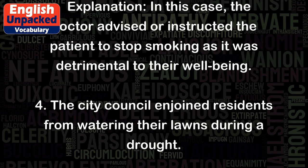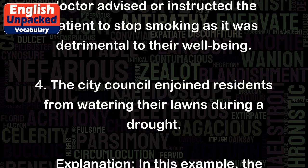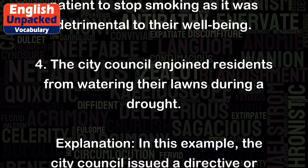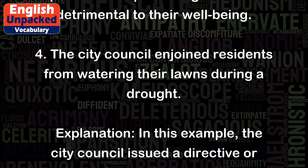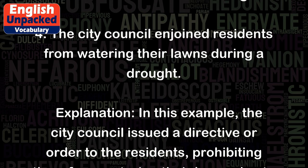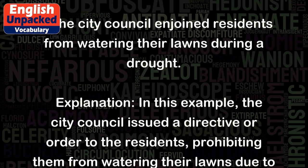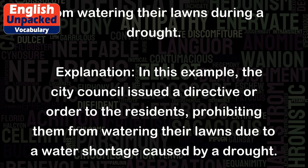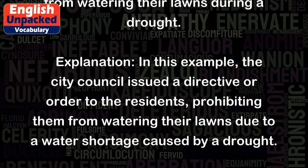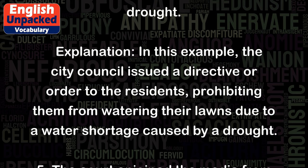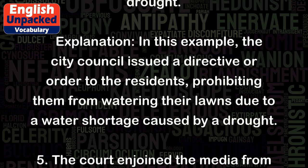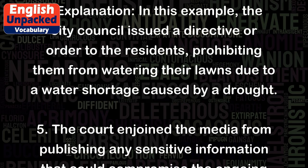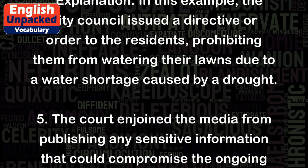Example 4: The city council enjoined residents from watering their lawns during a drought. In this example, the city council issued a directive or order to the residents, prohibiting them from watering their lawns due to a water shortage caused by a drought.